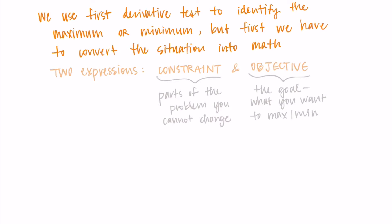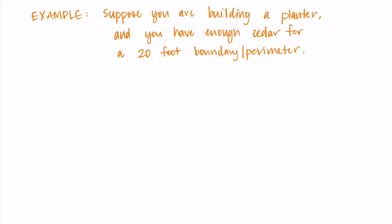We use those two words just to keep us organized with what we're doing in the problem. As part of our examples, we are always going to identify the constraint and the objective. Let's try this on an example so you can see the process that we follow. The situations are always going to be a little different, but the process is the same for each of these problems.